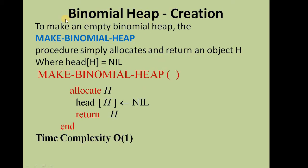Now let's begin with the first operation on the binomial heap: creation of a binomial heap. To make an empty binomial heap, the make_binomial_heap procedure is called. This is a simple procedure that allocates an object, sets the head of H to nil, and returns the binomial heap. This runs with a time complexity of order one — constant time complexity.